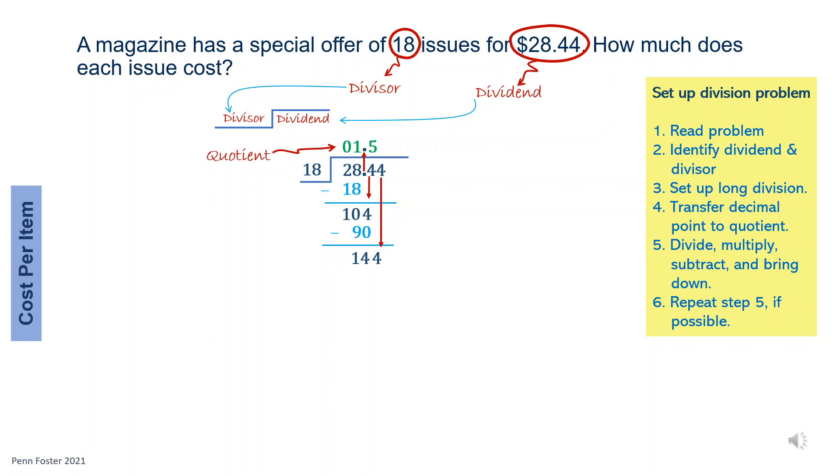Divide 144 by 18. It's 8. Multiply 8 times 18. It's 144. Subtract 144 minus itself. It's 0. Whenever subtraction results in a 0, it's the end of the long division. Each magazine issue costs $1.58.